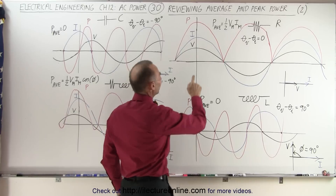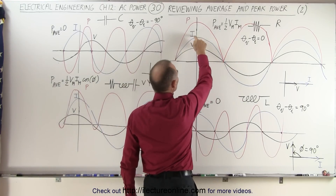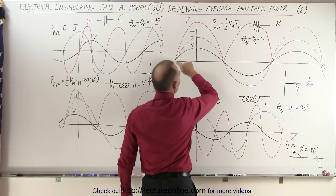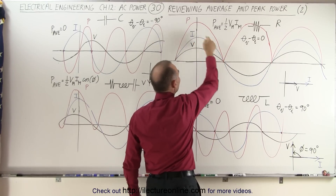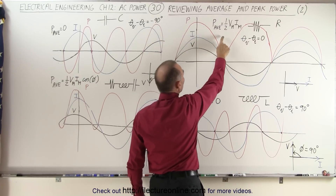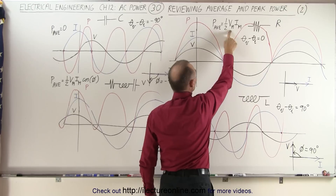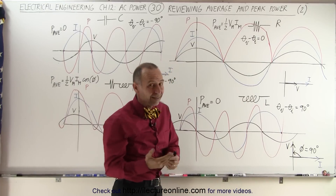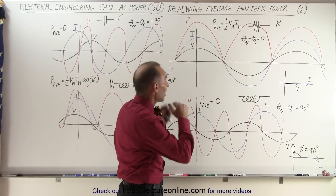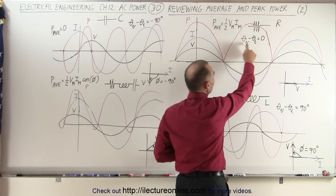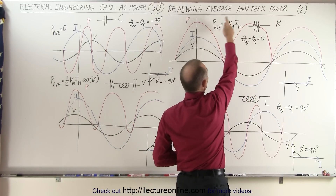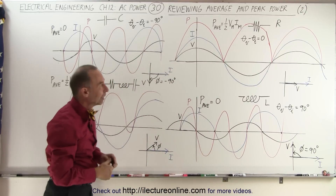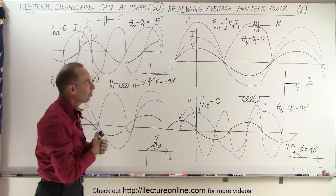Notice that the phase between the voltage and the current is equal to zero, as indicated here. The average power delivered will be in phase with the current and the voltage. It will be one-half the maximum voltage times the maximum current, times the cosine of the phase angle between the two — and of course the cosine of zero is one. So that's the average power delivered to the resistor in a purely resistive circuit.